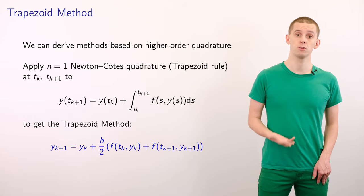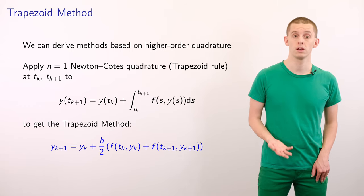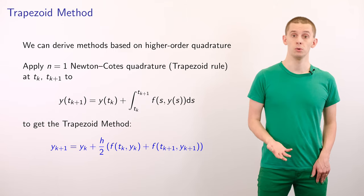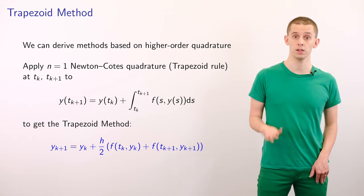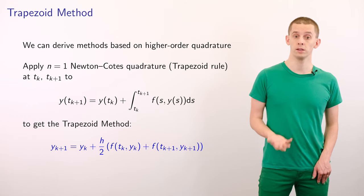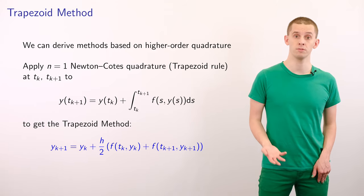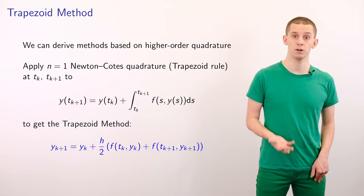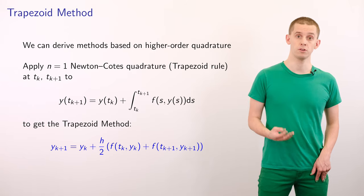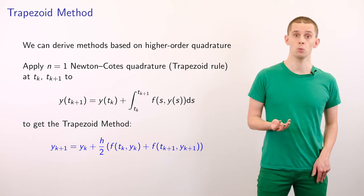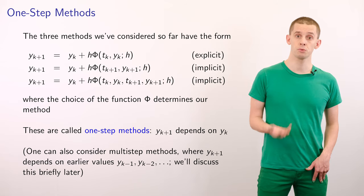We can also derive methods based on higher order quadrature. Suppose we apply n equal 1 Newton-Cotes quadrature, which is the trapezoid rule, to the interval from tk to tk plus 1. We'll use interpolation points at tk and tk plus 1. Then, in this case, we'll end up with the trapezoid integration method, where yk plus 1 is equal to yk plus h divided by 2 times f of tk yk plus f of tk plus 1 yk plus 1. This is still an implicit method because the yk plus 1 appears on the right-hand side.